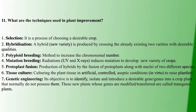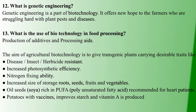Other plant improvement techniques include protoplast fusion — used to produce hybrids. Next is tissue culture — growing tissue under artificial specific conditions. Next is genetic engineering — where genes are modified or changed to produce new traits. Genetic engineering is also related to biotechnology.